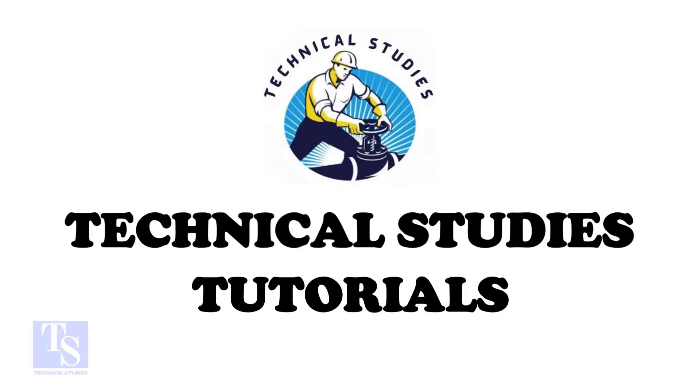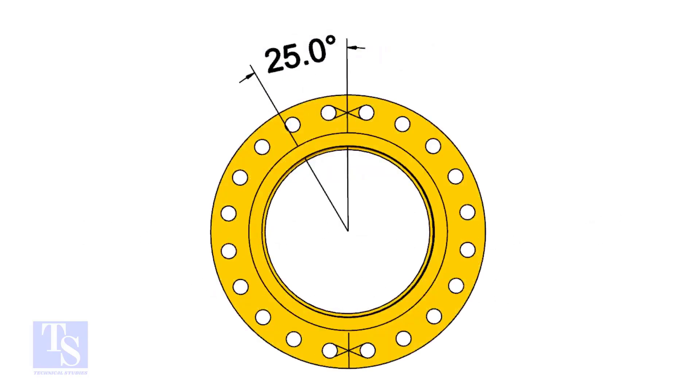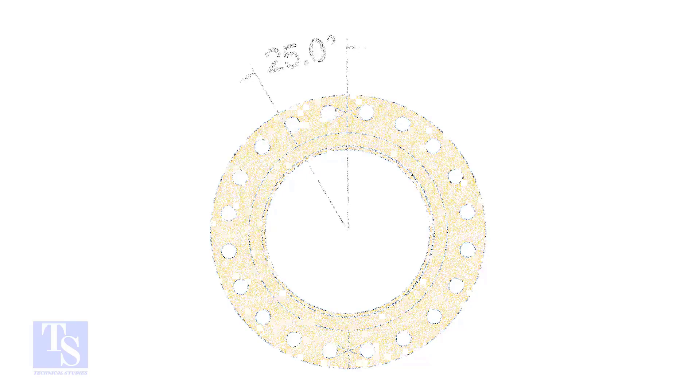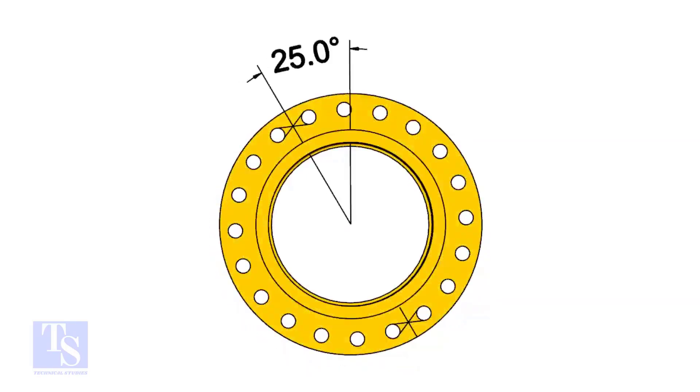The pipe and the flange size is 16 inch, and the flange will rotate 25 degree anticlockwise. Hope you all know the difference between clockwise and anticlockwise rotation.